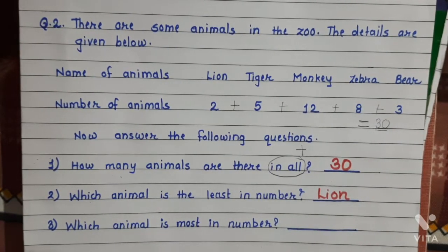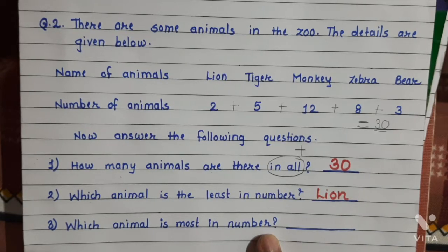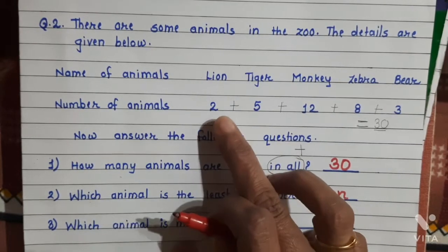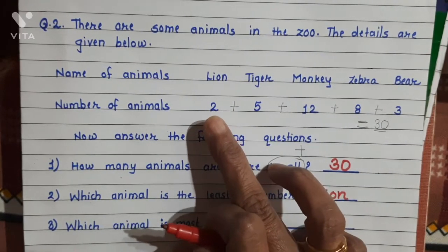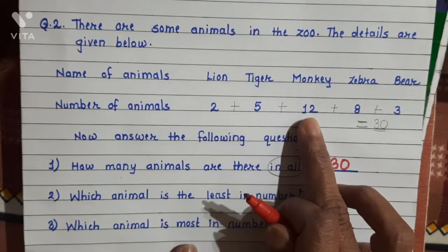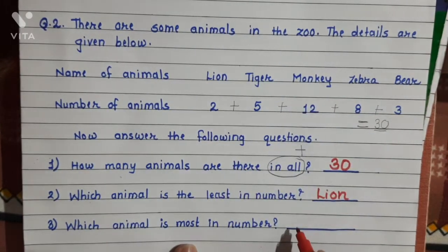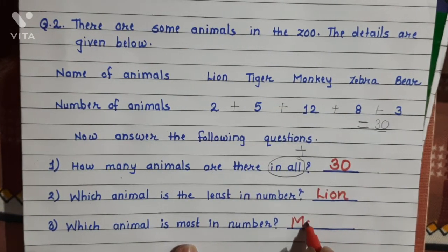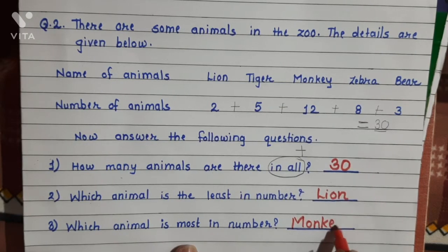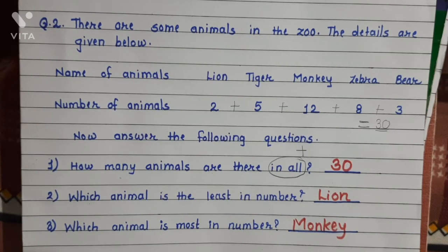Now the last question: Which animal is most in number? Most means more. Find out the bigger number: 2, 5, 12, 8, and 3. From this, 12 is the bigger number. And which animal has 12? Monkey. So we will write the answer: Monkey. Now students, these both questions you have to write in your notebook and we will see in the next session. Bye-bye students.